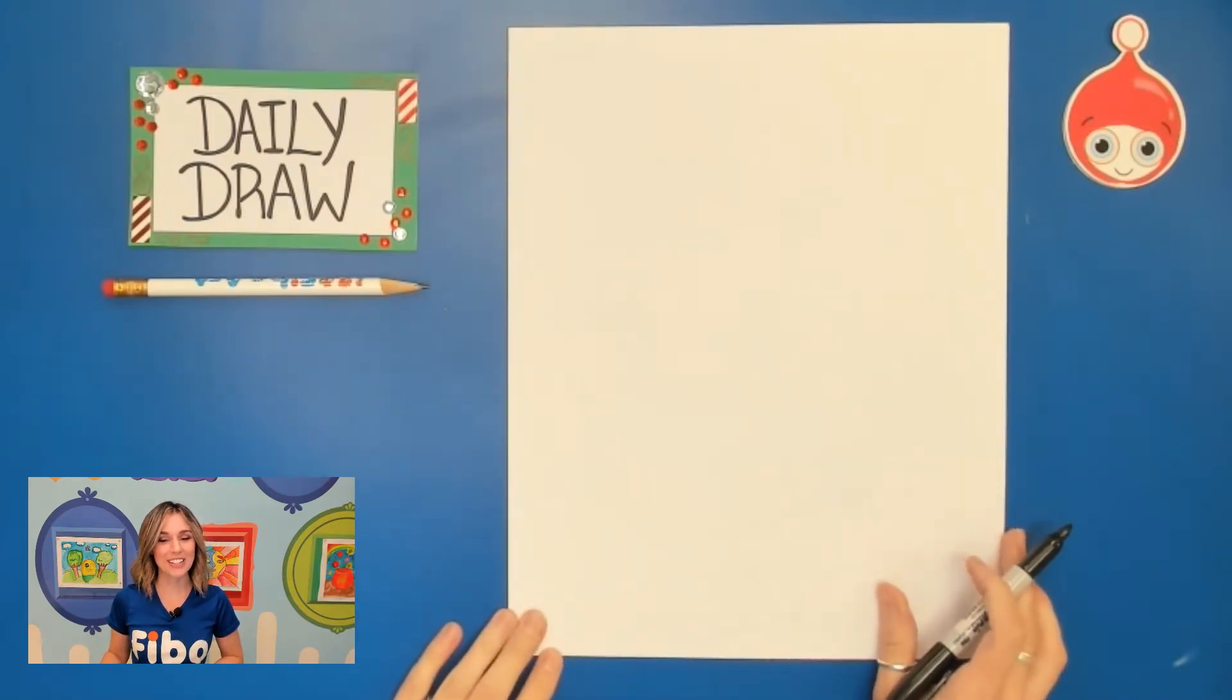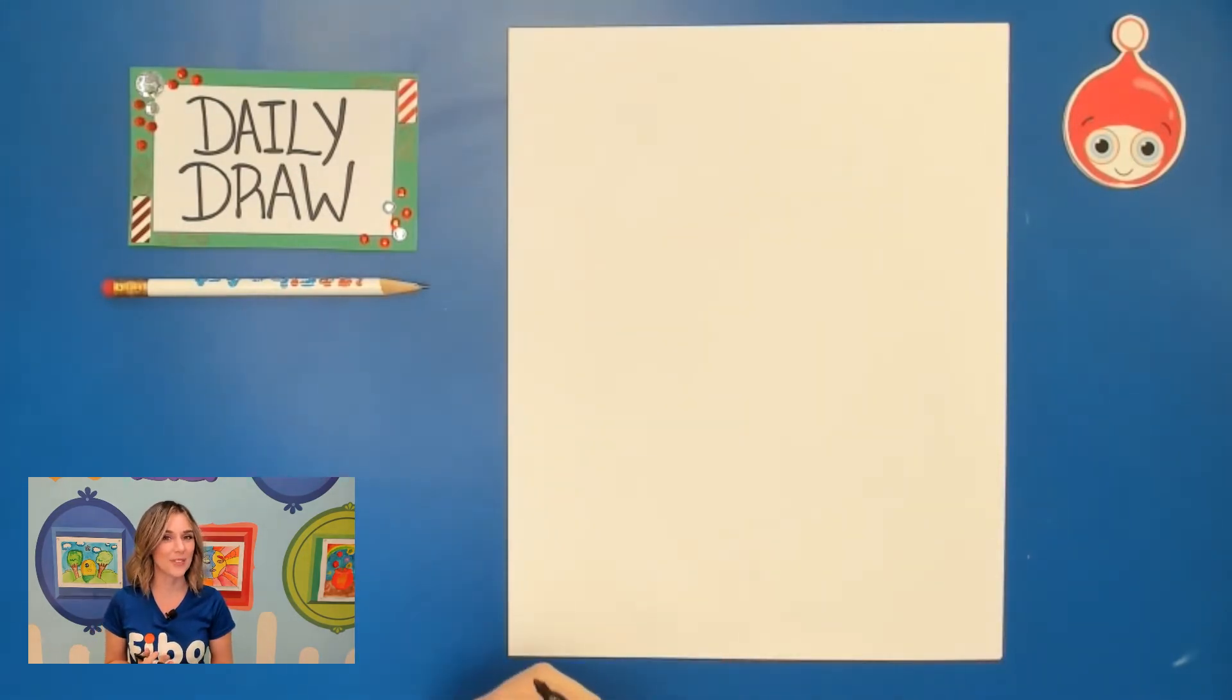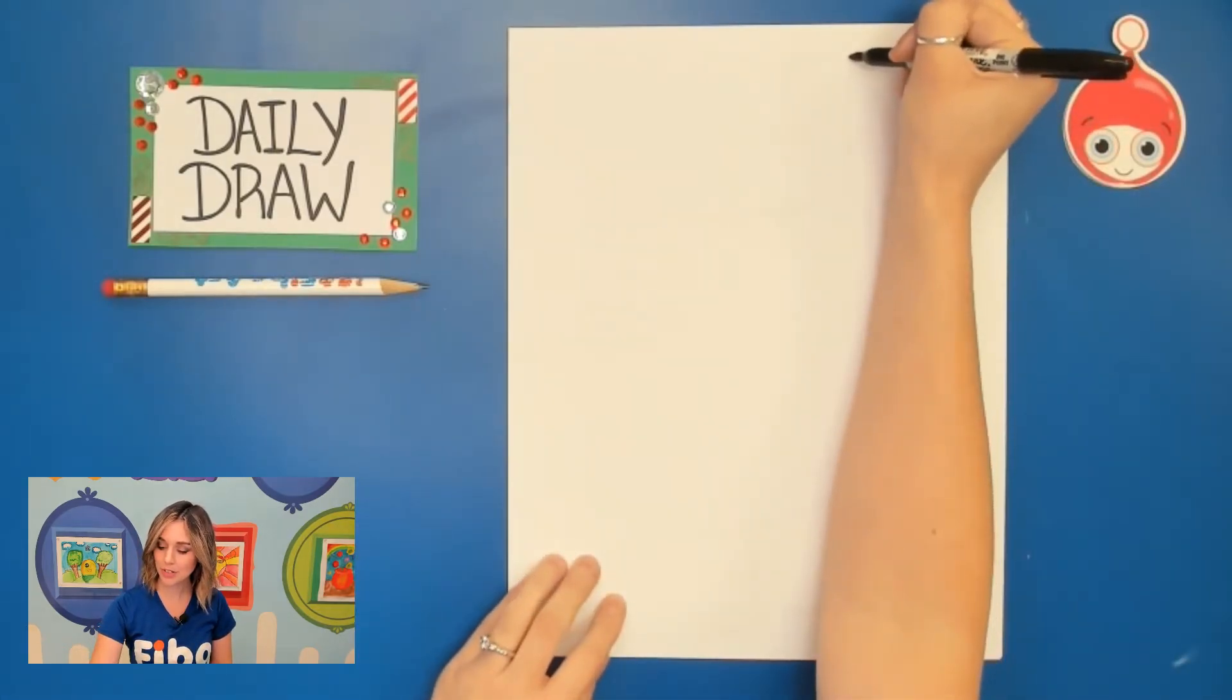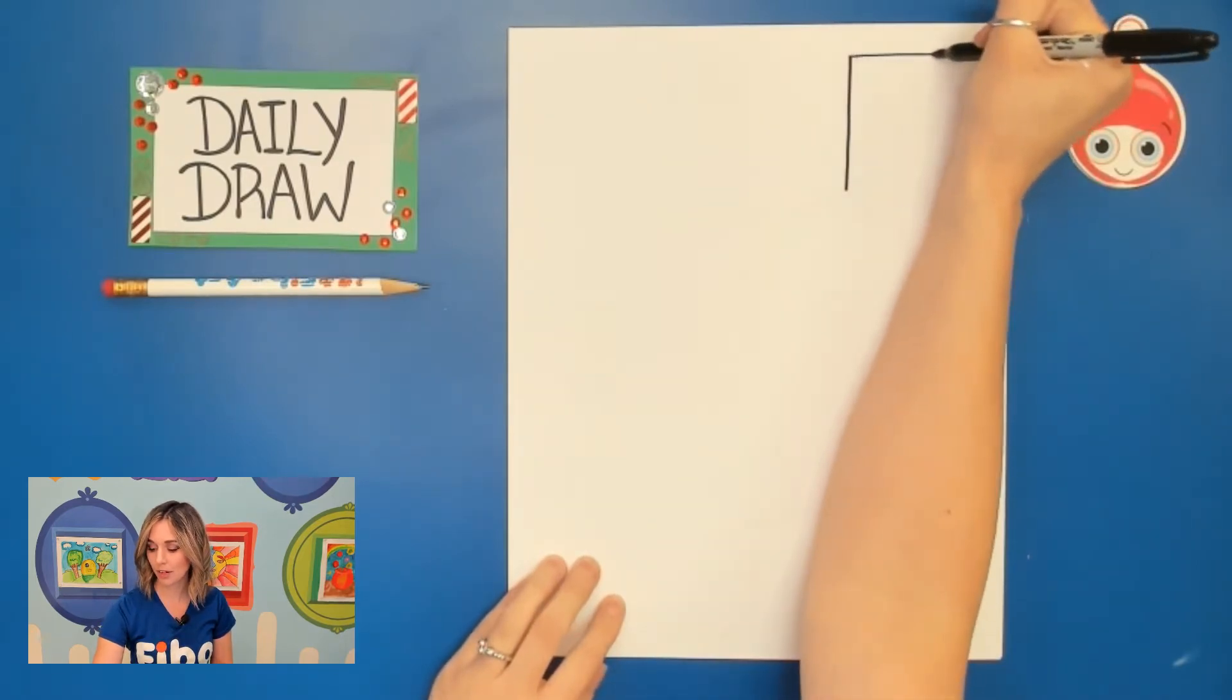The first thing we need to do is grab our piece of paper and make sure that it is vertical which means up and down. You're also going to be using that pencil and the first thing we're going to do is draw that square in the top right corner.